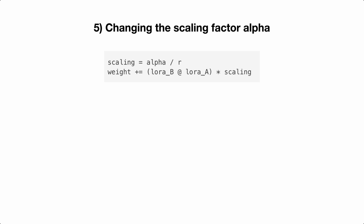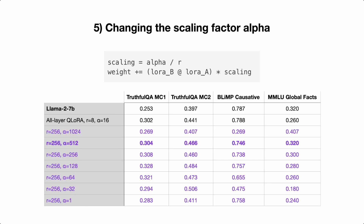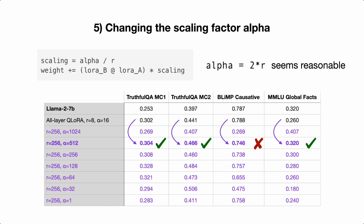There's a scaling factor alpha that we can change. It determines how strongly the weight update is added to the original weights — kind of like a learning rate, except it's applied during the forward pass rather than the backward pass. Changing the rank and alpha gives various results. I tried smaller and larger ranks — rank 256 performed best. I found that using alpha 512, which is about two times the rank, generally gave the best results. On most benchmarks there's an increase, except on one where there's a decrease — overall improved, but not amazing.